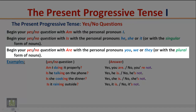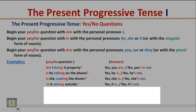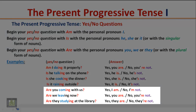Begin your yes/no question with 'are' with the personal pronouns 'you,' 'we,' or 'they,' or with the plural form of nouns. Examples: 'Are you coming with us?' — 'Yes, I am.' / 'No, I'm not.' 'Are we leaving now?' — 'Yes, you are.' / 'No, you're not.' 'Are they studying at the library?' — 'Yes, they are.' / 'No, they're not.'